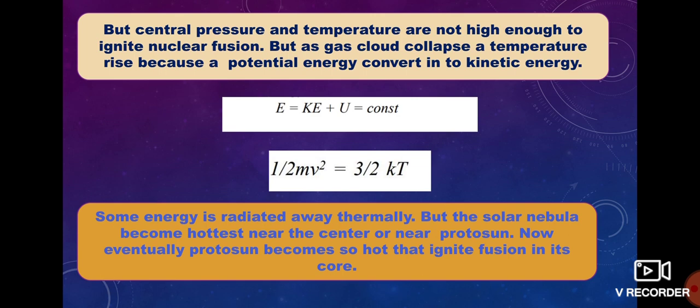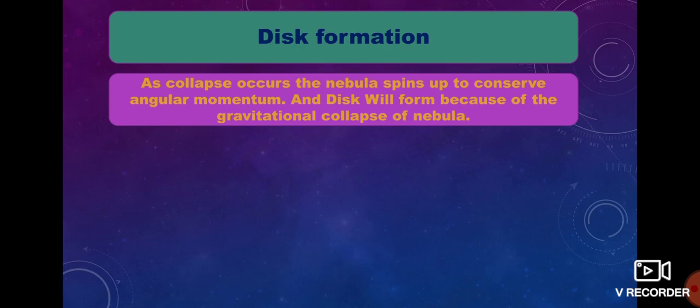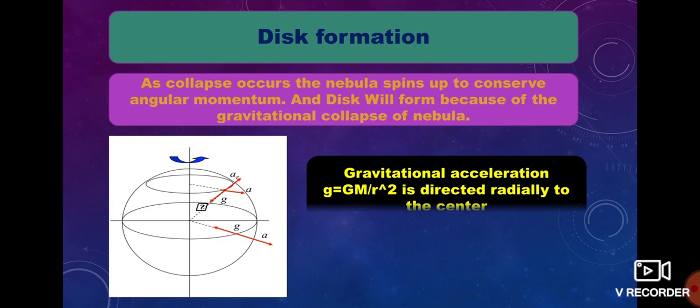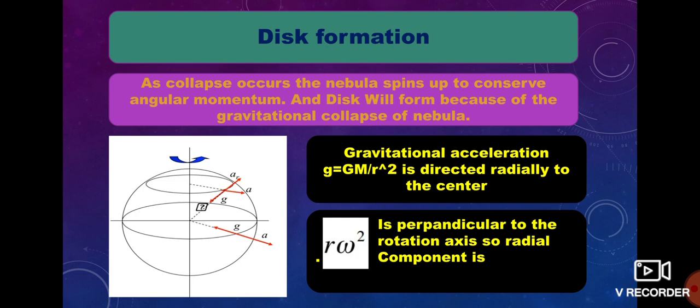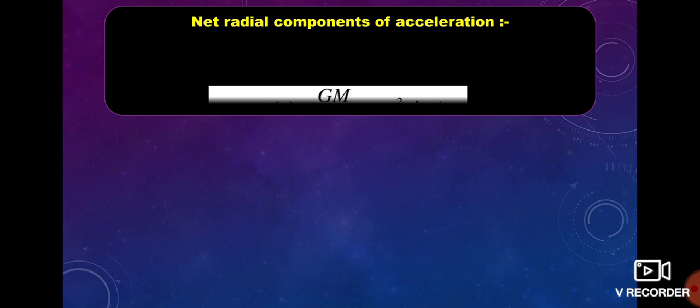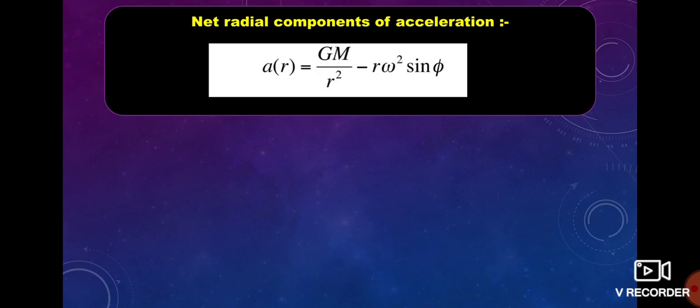Eventually the protosun becomes so hot that it ignites fusion in its core. For disk formation: as collapse occurs, the nebula spins up to conserve angular momentum, and a disk forms because of the gravitational collapse of the nebula. The gravitational acceleration g = GM/r² is directed radially toward the center, and rω²sinφ is the radial component of centrifugal acceleration. So the net radial component of acceleration is given by a = GM/r² − rω²sinφ.